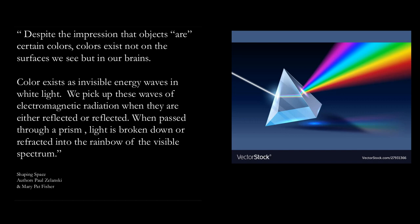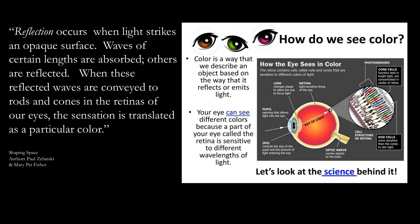So things don't have color? Not really. Despite the impression that objects are certain colors, colors exist not on the surface we see, but in our brains. Colors exist as invisible energy waves in white light. We pick up these waves of electromagnetic radiation when they are reflected or passed through a prism. Light is broken down or refracted into the rainbow of a visual spectrum.